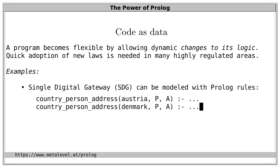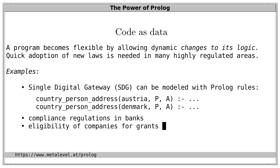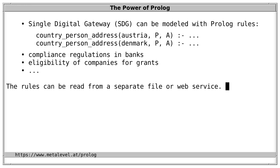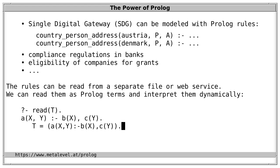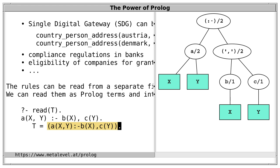There are countless other examples like this — in banks and government services, for instance to determine which grants apply for a company where conditions and types of companies change all the time. The rules need not be stored in the Prolog database; we can dynamically read them from a file or web service. We can use Prolog to assert the rules or keep the database unchanged and still interpret them dynamically. For example, we can use the standard predicate 'read' to read a term: if we enter a rule, the variable T is bound to that rule represented as a term with principal functor ':-' and two arguments, just like a Prolog rule in a source file, but read dynamically.